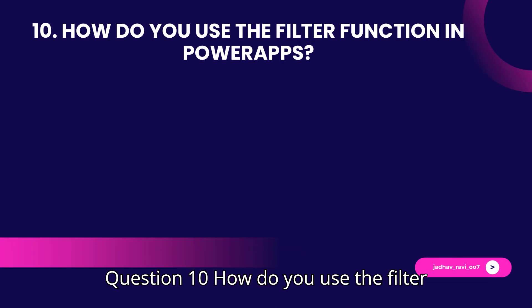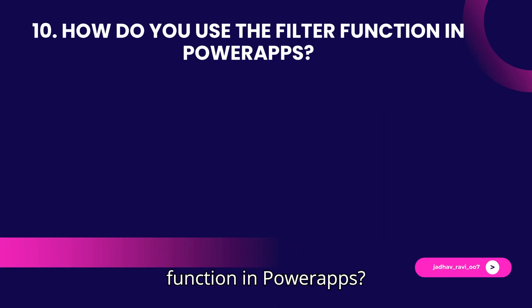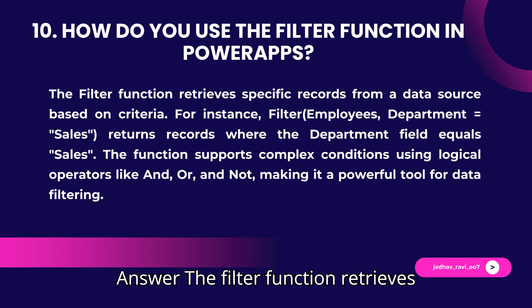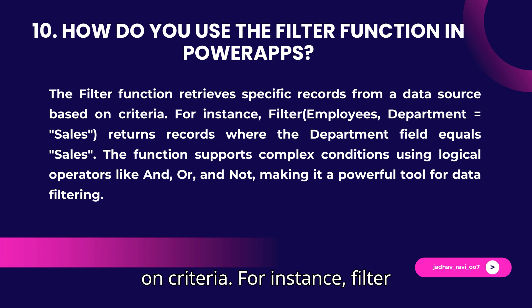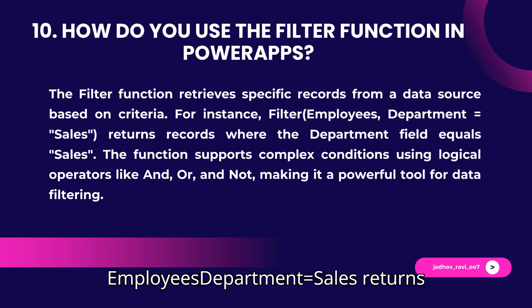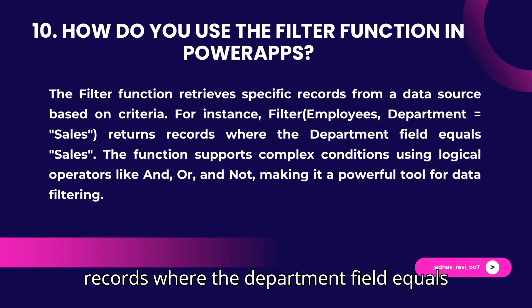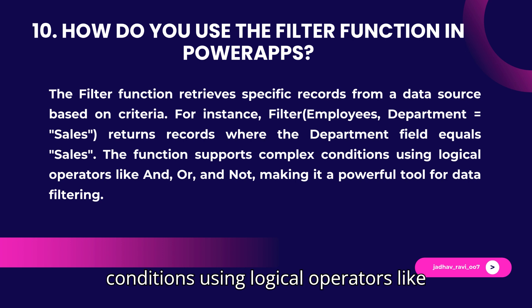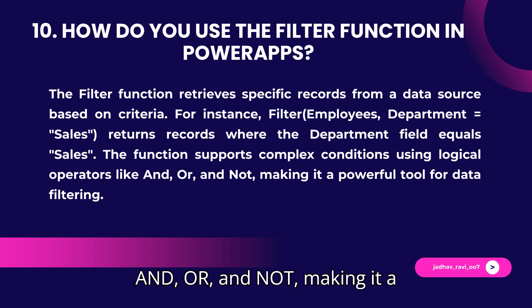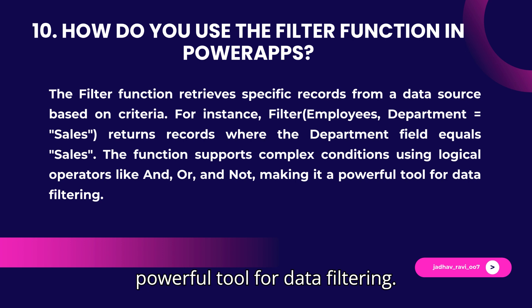Question 10: How do you use the Filter function in PowerApps? Answer: The Filter function retrieves specific records from a data source based on criteria. For instance, Filter(Employees, Department = "Sales") returns records where the Department field equals Sales. The function supports complex conditions using logical operators like AND, OR, and NOT, making it a powerful tool for data filtering.